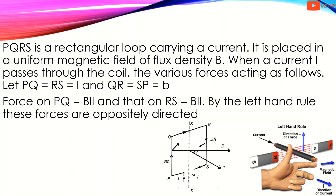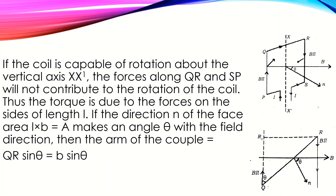If the coil is capable of rotation about the vertical axis XX', the forces along QR and SP will not contribute to the rotation of the coil. Thus, the torque is due to the forces on the sides of length L. If the direction N of the face area A makes an angle theta with the field direction, then the arm of the couple is equal to QR sin theta, which equals B sin theta.